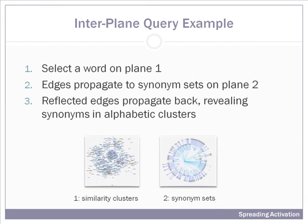Here is the procedure for using spreading activation to make a discovery in the dataset. First, we select a word on the first plane, which are the similarity clusters. Using spreading activation, edges will propagate to the synonym sets on the second plane. Reflected edges will then propagate back, revealing the synonyms in the alphabetic clusters.